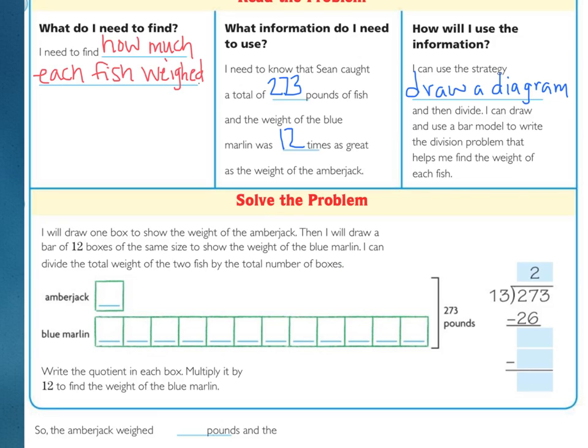And we can divide the total weight of the two fish by the total number of boxes. So, we are not dividing by 12. The blue marlin has 12 boxes, but we also have to add the one box for the amberjack because all of those together equal 273 pounds. So, our divisor is 13, 12 boxes for the marlin, and one box for the amberjack. Now, go ahead, press pause, and work out your division right here. If you divide it correctly, you should have found the quotient of 21.